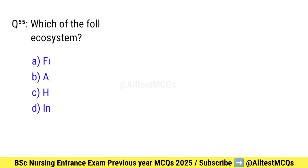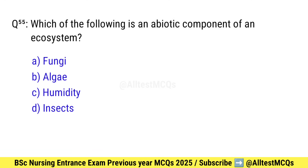Question number 55. Which of the following is an abiotic component of an ecosystem? Correct option is C: Humidity.